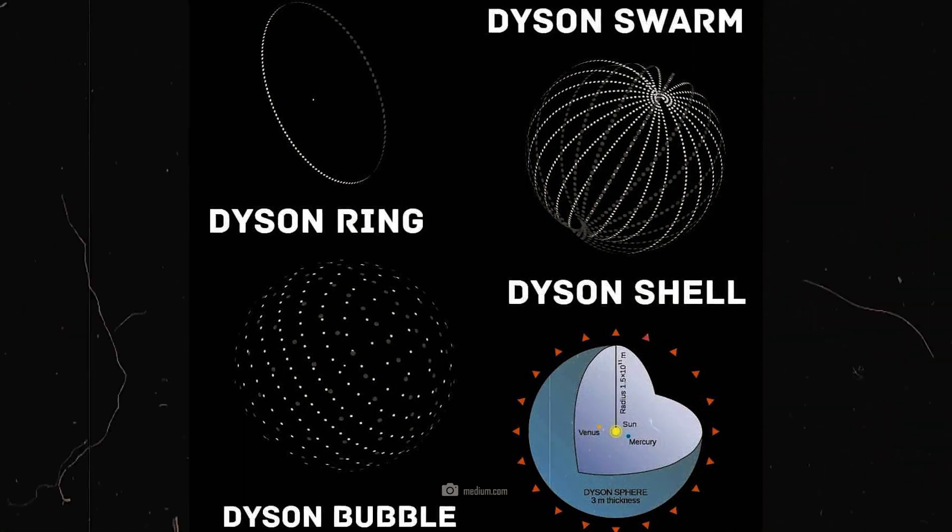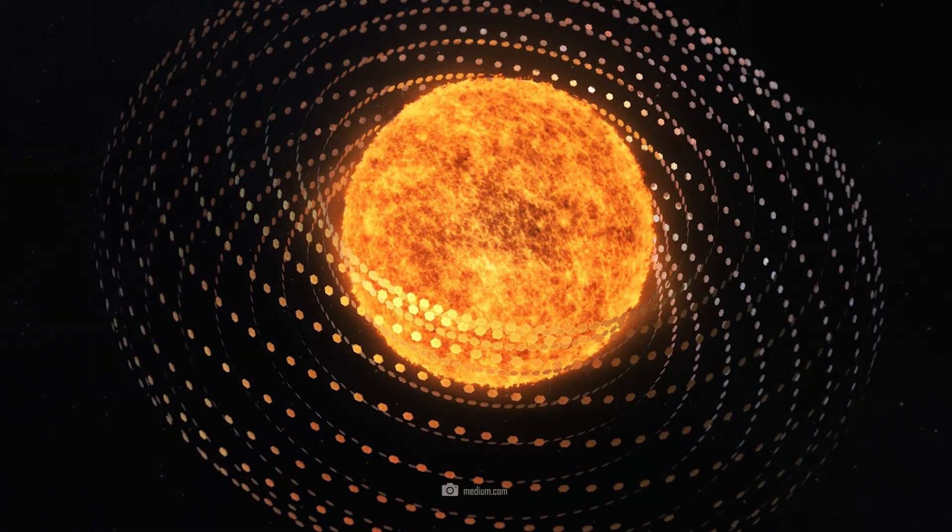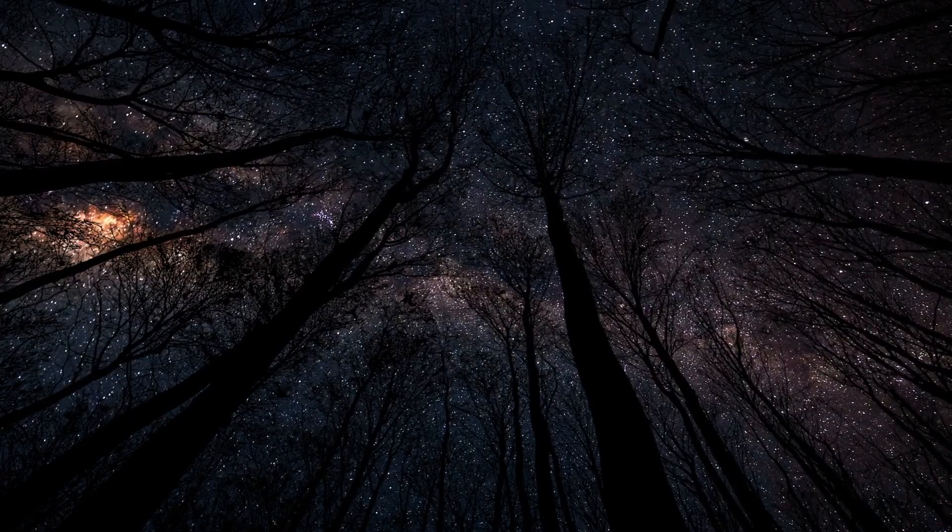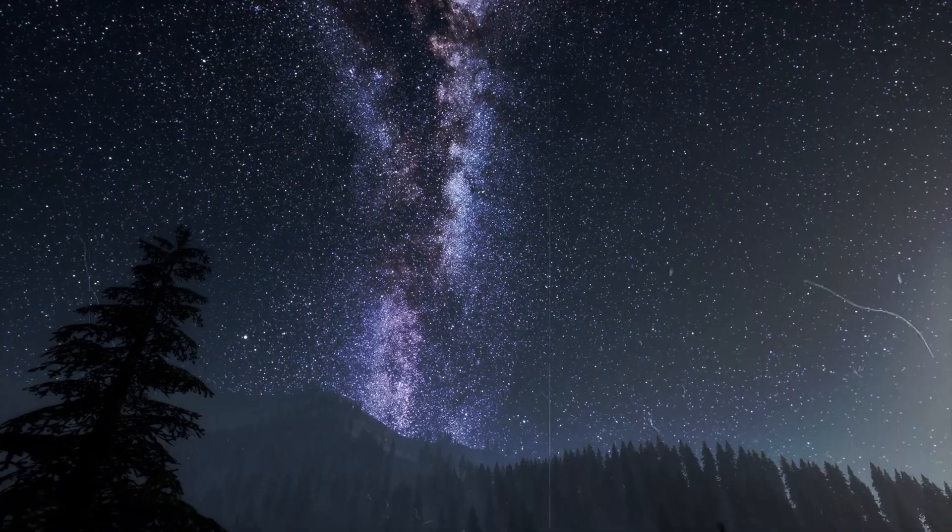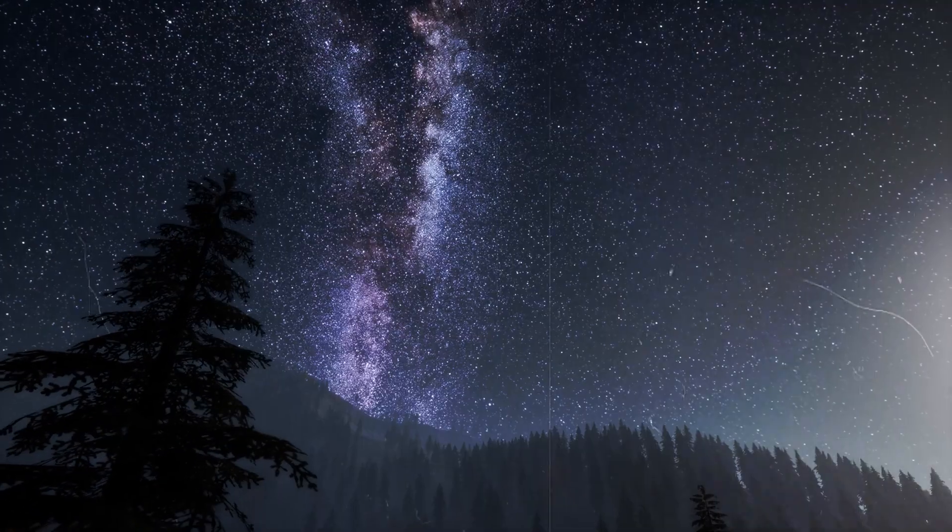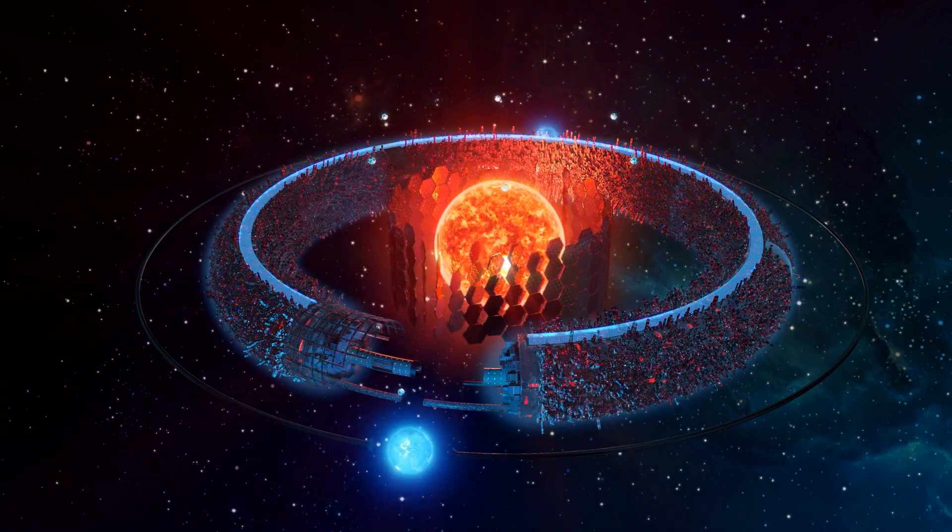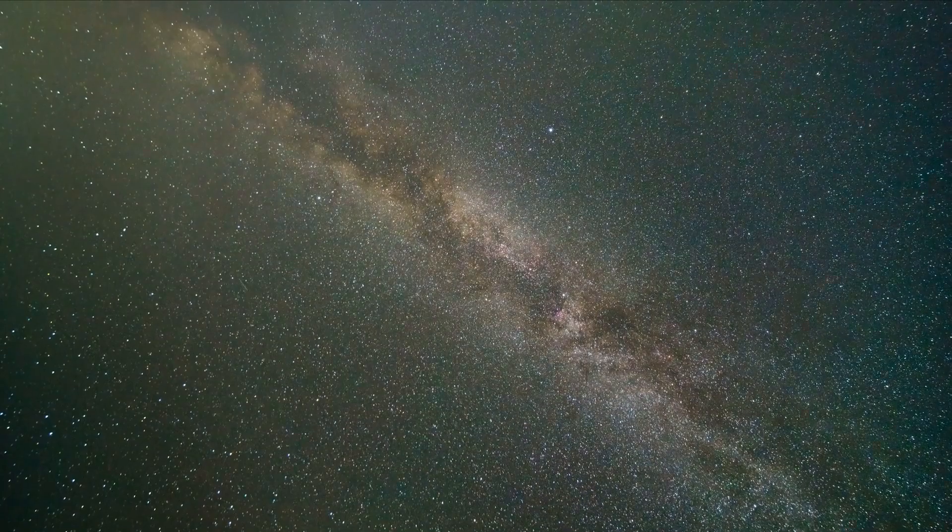Even more interesting is the Dyson Bubble, a huge collection of translucent structures that are held in position by radiation pressure from the star. With this power plant, aliens with the necessary technical know-how could use the radiation pressure of the star to maintain their position. However, simulations have shown that controlling the bubble structure would be difficult and the whole construct would be rather unstable.